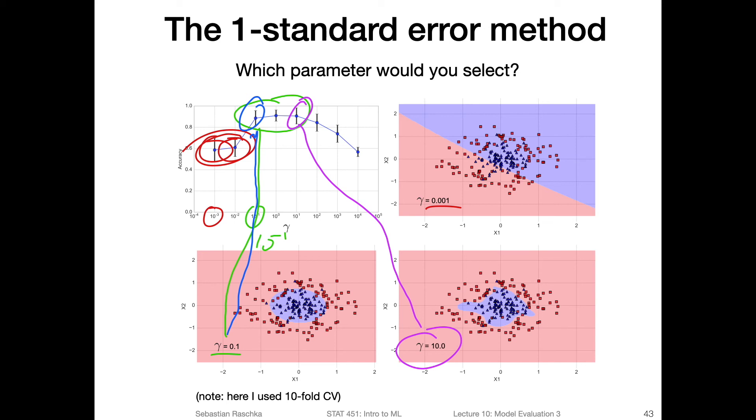You can see, based on the decision boundary, how complex the model is. Of course, you can't really do that if you have a dataset with more than two features, because then you can't draw a decision boundary. But you can think of it like that. The more we go to the right, this would be high complexity. And here on the left hand side, we would have low complexity.